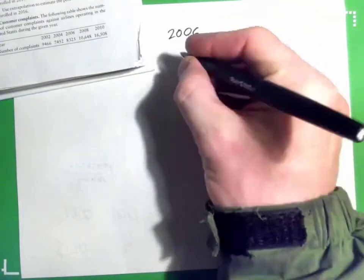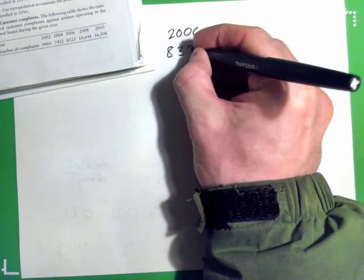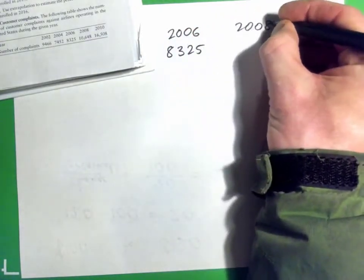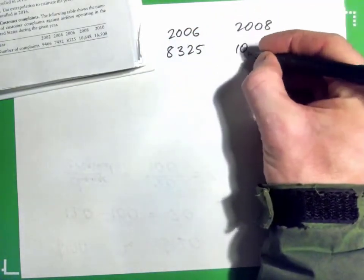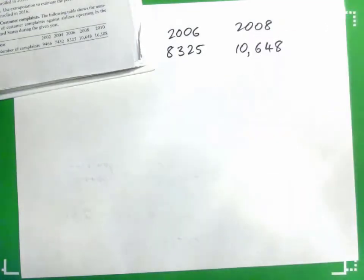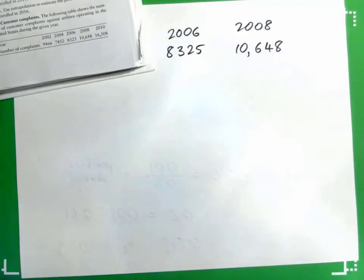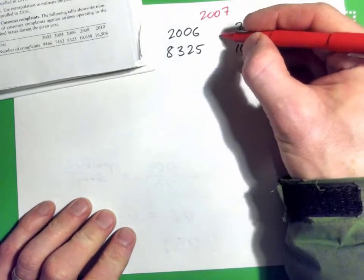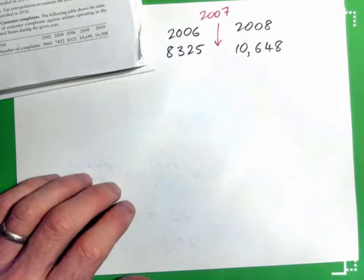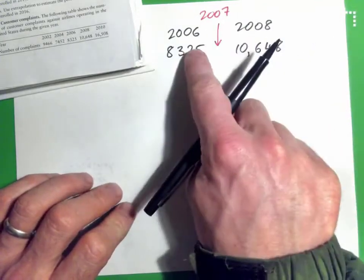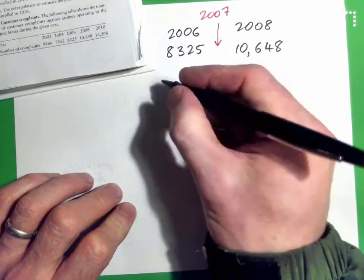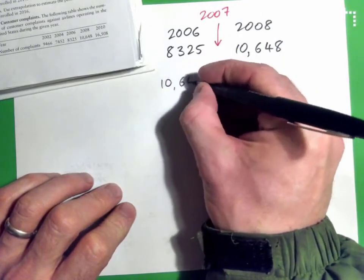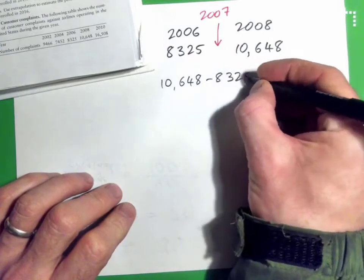In 2006 there were 8,325 complaints and in 2008 there were 10,648 complaints. To estimate 2007, you would imagine it to be halfway between these two numbers. That's interpolation — first get the change, so you go 10,648 subtract 8,325 in your calculator.